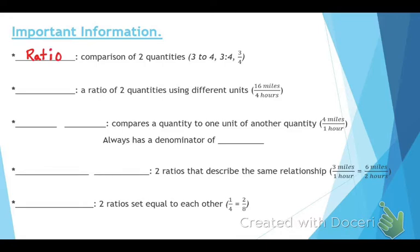The next term is a ratio of two quantities using different units. For example, 16 miles per four hours. That is called a rate.